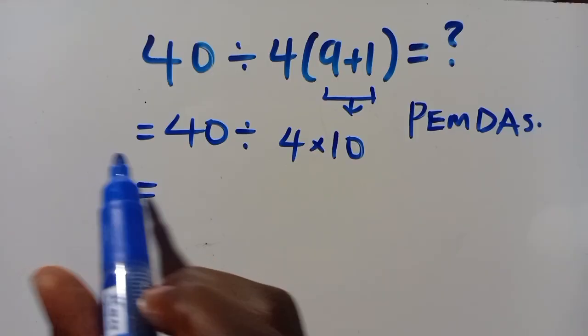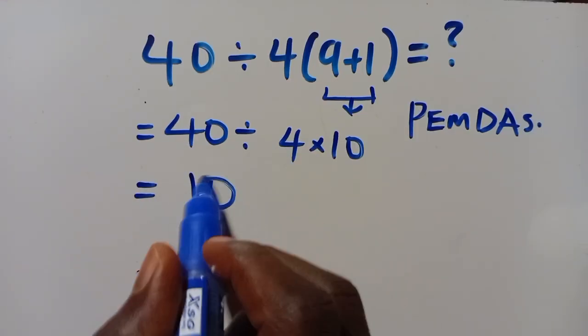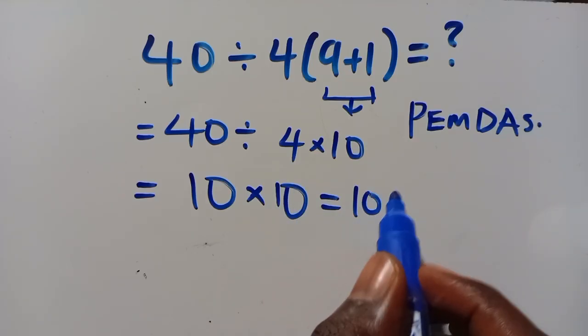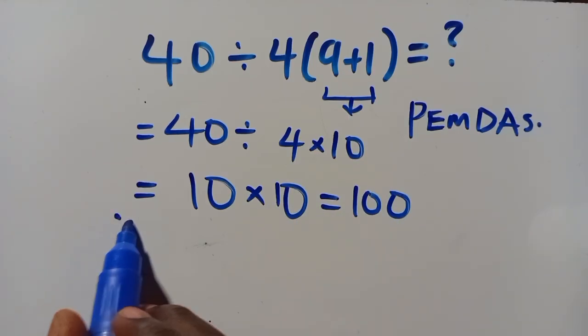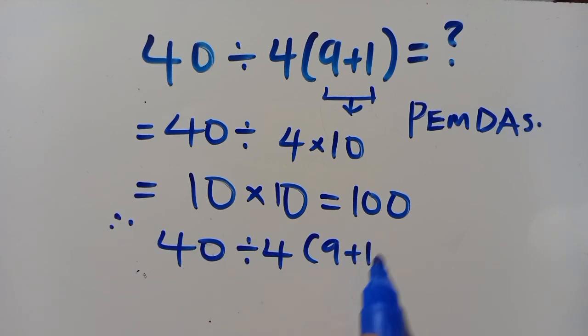which gives us 10. Then 10 times 10 equals 100. So therefore, 40 divided by 4 times (9 plus 1) equals 100.